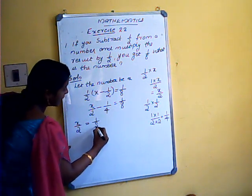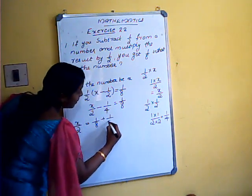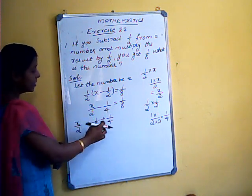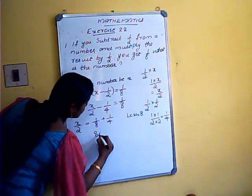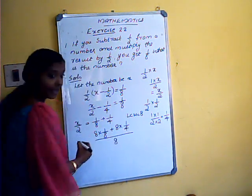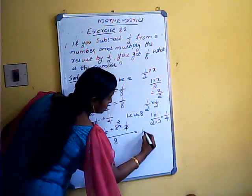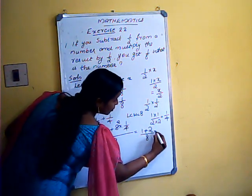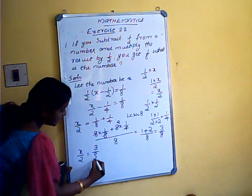Moving the variable to one side: x/2 equals 1/8 plus 1/4. The denominators are different, so we find the LCM of 8 and 4, which is 8. Multiplying through: 1 plus 2 gives 3, so x/2 equals 3/8.